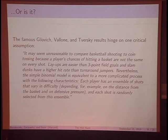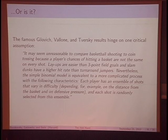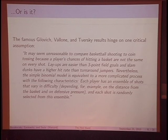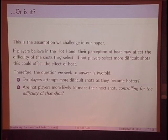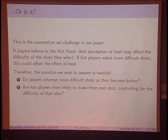If you actually read the original Gilovich, Valona, Tversky paper, their results hinge on a very critical assumption. The authors write: 'It may seem unreasonable to compare basketball shooting to coin tossing, because a player's chances of hitting a basket are not the same on every shot. Layups are easier than three-point field goals, and slam dunks have a higher hit rate than turnaround jumpers. Nevertheless, the simple binomial model is equivalent to a more complicated process where each player has an ensemble of shots that vary in difficulty, and each shot is randomly selected from this ensemble.' The 'randomly selected' part is what we take issue with — if players believe in the hot hand, their perception of heat may affect the difficulty of shots they select. Hot players may select more difficult shots, which could offset the effect of heat.